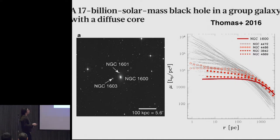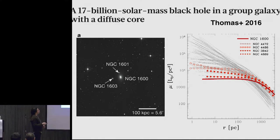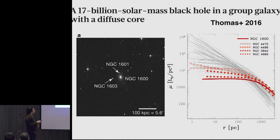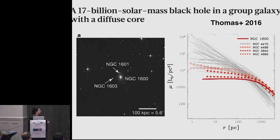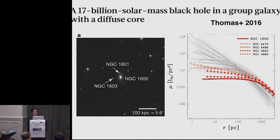And the ones that have the big black holes also show a deficit of light in their centers, which we believe is scoured out by pairs of black holes ejecting stars as the binary tightens. And so we have very indirect evidence for tight pairs of black holes.